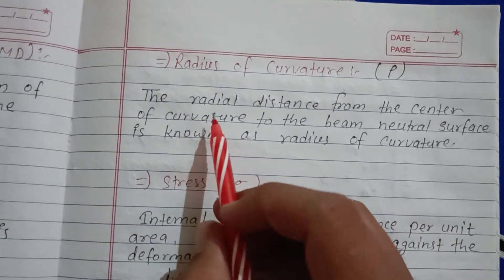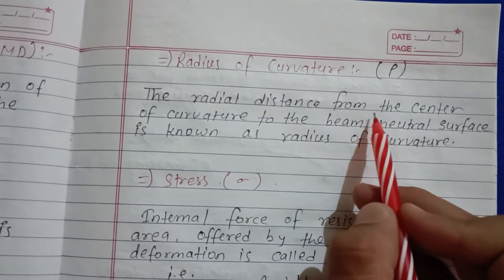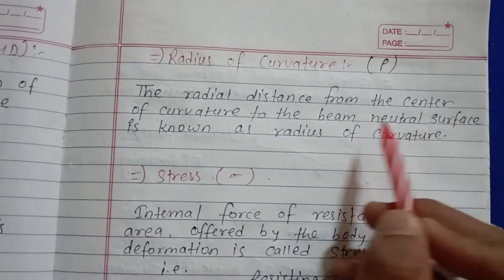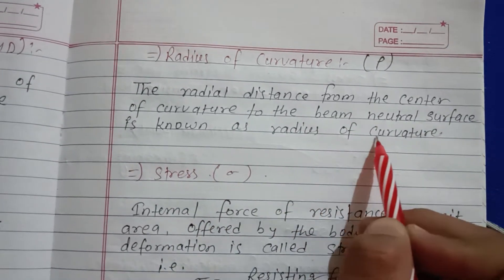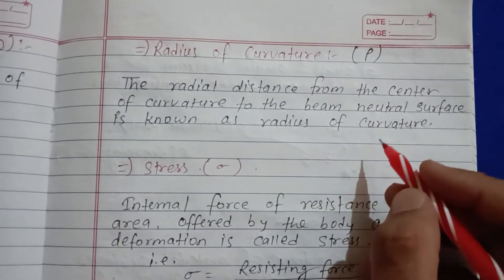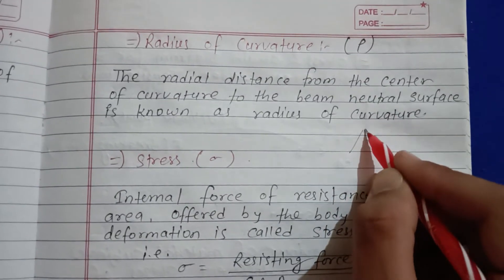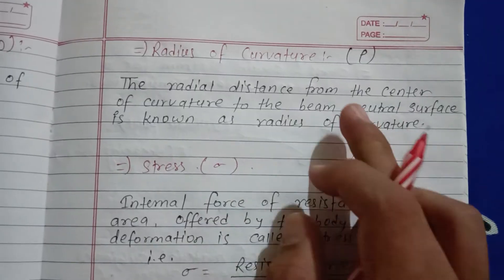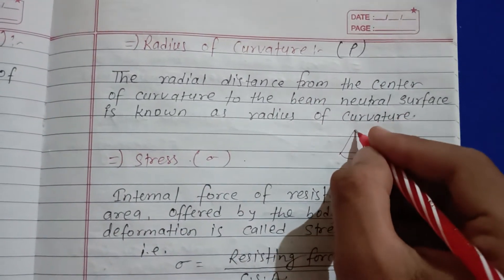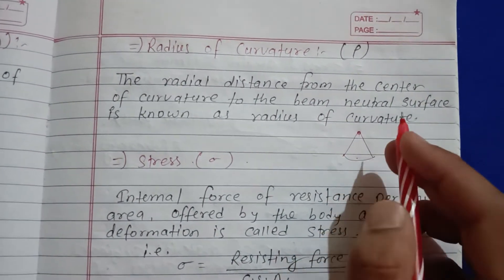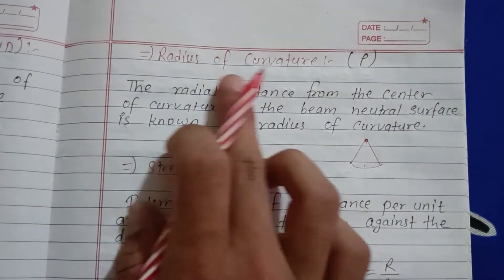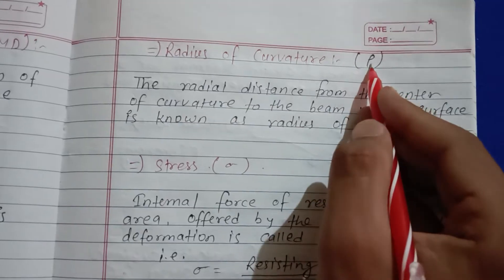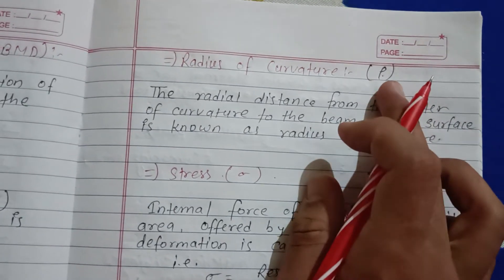Radius of curvature: it is the radial distance from the center of curvature to the neutral surface of the beam. It is denoted by rho (ρ). The radius of curvature is the distance from the center to the curved surface.